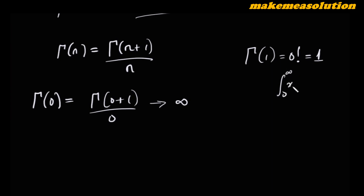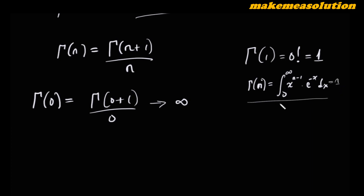If you want to know why zero factorial is one, you have to evaluate this integral — the definition of gamma functions: x to the n minus one times e to the minus x dx — and solve for n equal to one. I'll do that in another video. So gamma of zero is gamma of one divided by zero, which is one over zero — that's infinity. So gamma of zero is infinity.